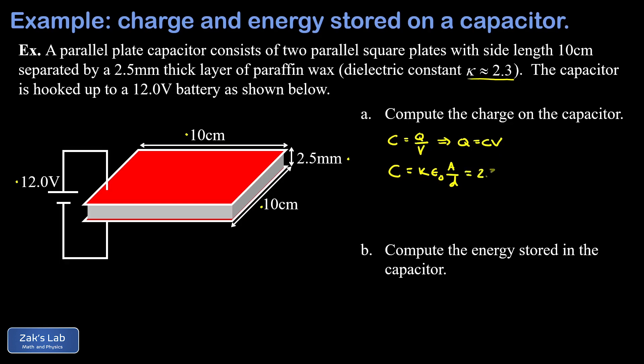Plugging everything in, we get 2.3, the permittivity of free space, that's 8.85 times 10 to the negative 12, and we can write those units as farads per meter.